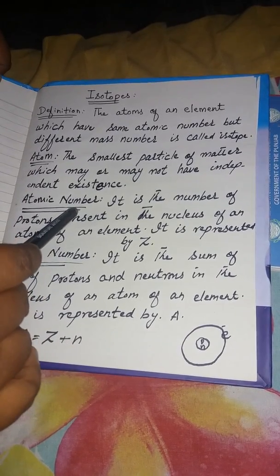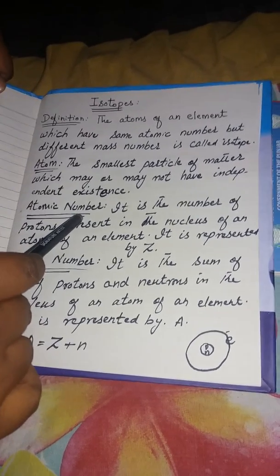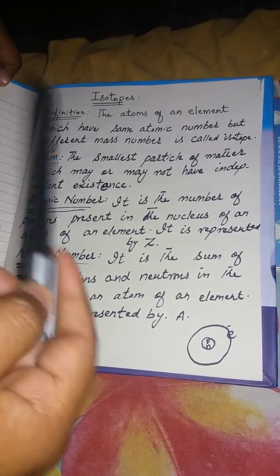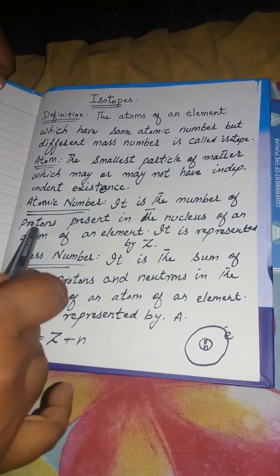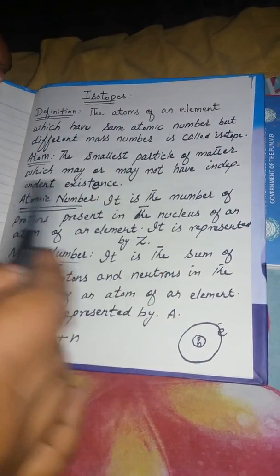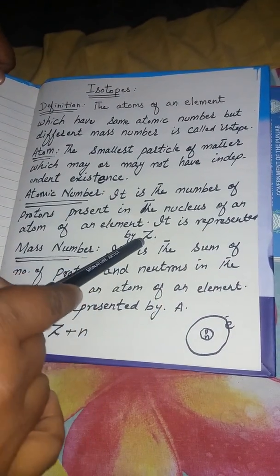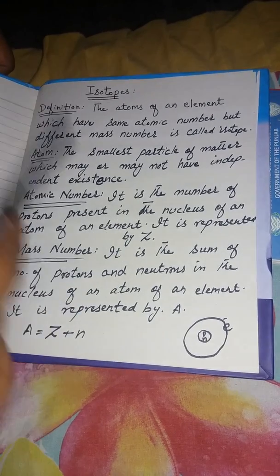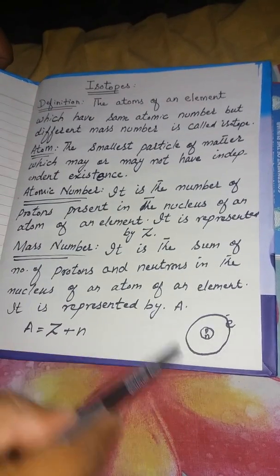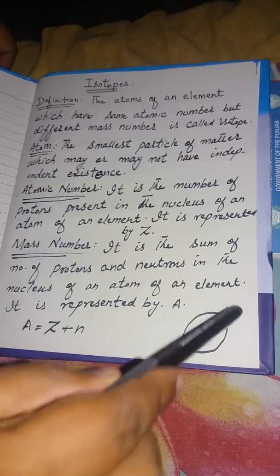Similarly, I will define atomic number. What is atomic number? Atomic number is actually the number of protons present in the nucleus of an atom of an element. It is represented by Z.